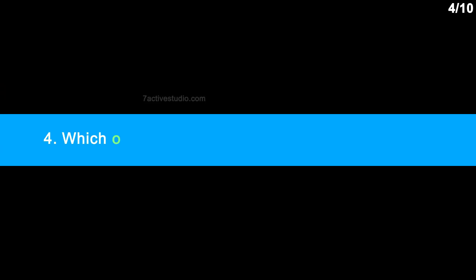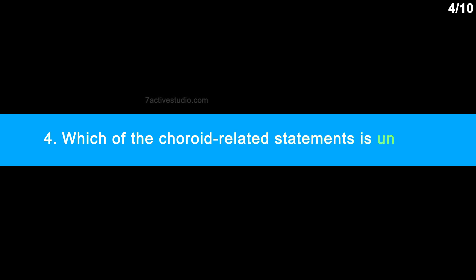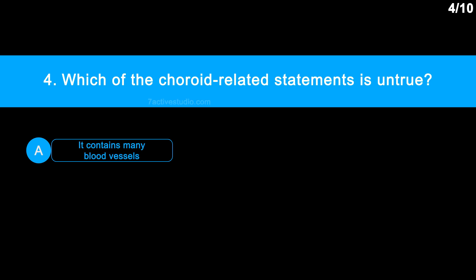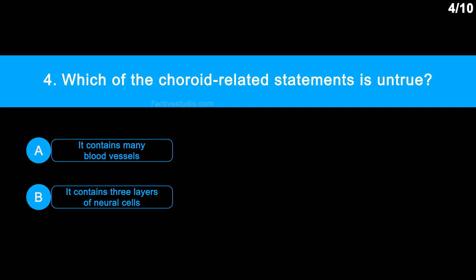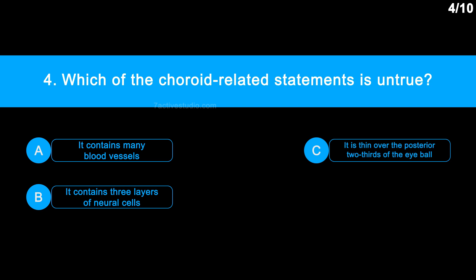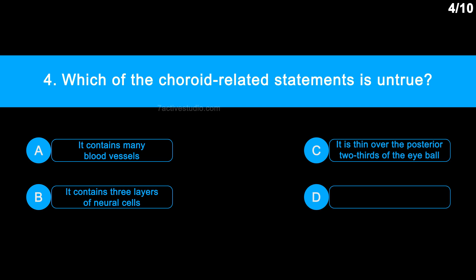Question number 4: Which of the choroid-related statements is untrue? Option A: it contains many blood vessels. Option B: it contains three layers of neural cells. Option C: it is thin over the posterior two-thirds of the eyeball. Option D: it becomes in the anterior part to form the ciliary body.